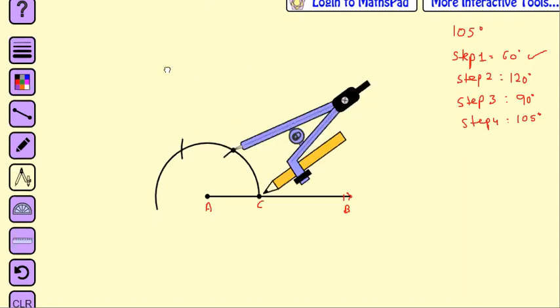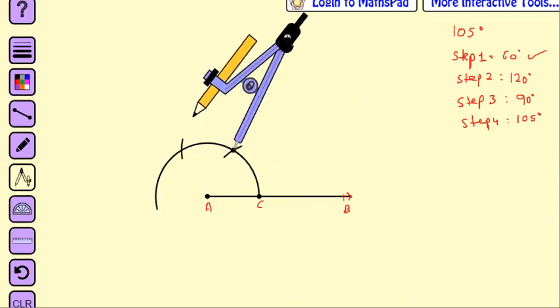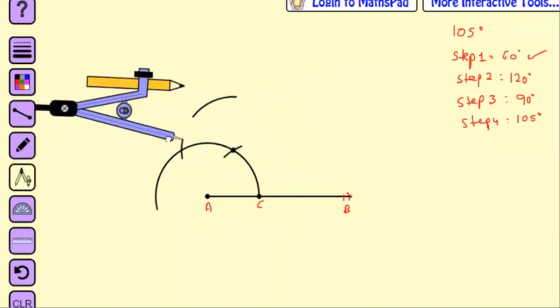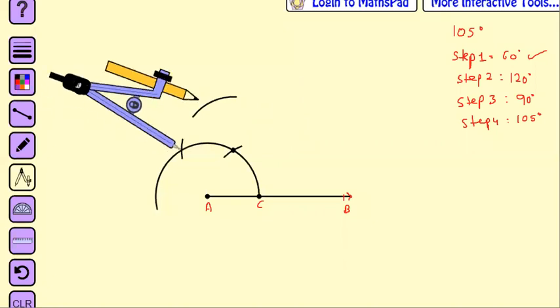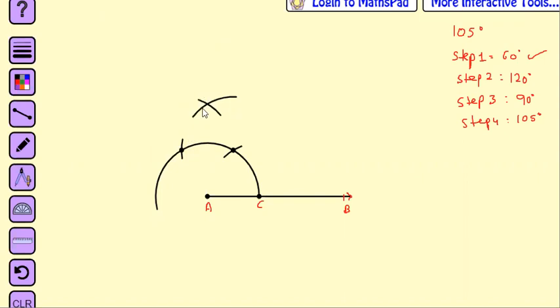Now I will focus on 90, so this is one arc, another arc. Now I will draw a line over here, a dotted line. Dotted line is not possible for me, but obviously you can draw, isn't it? Yes, sir.